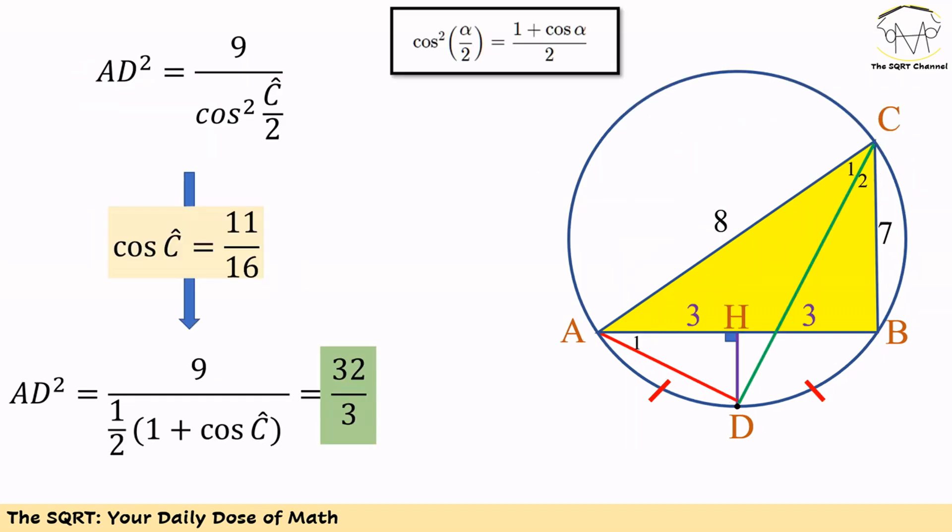Going back to our equation, AD squared equals 9 over cosine squared of C/2. We know cos C, and we can write cos C in terms of cos(C/2). Using the half-angle identity shown, we can simplify the equation for AD squared.